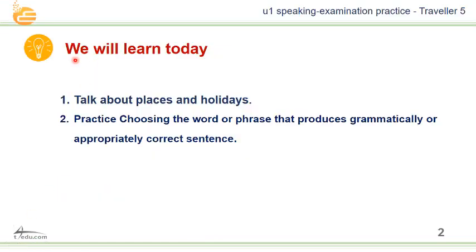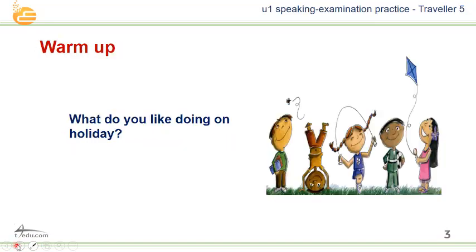What we will learn today: we will learn two things. First, talk about places and holidays. Second, to practice choosing the word or even the phrase that produces a grammatically or appropriately correct sentence. These are easy objectives in this lesson.